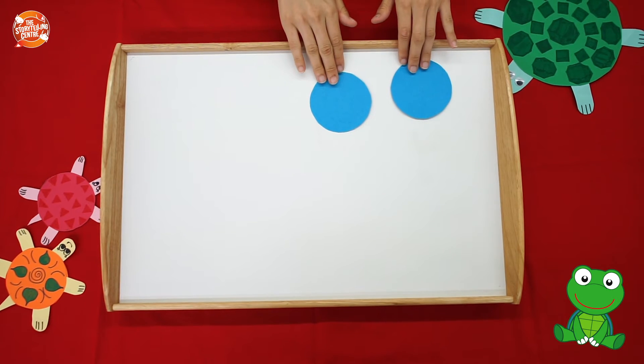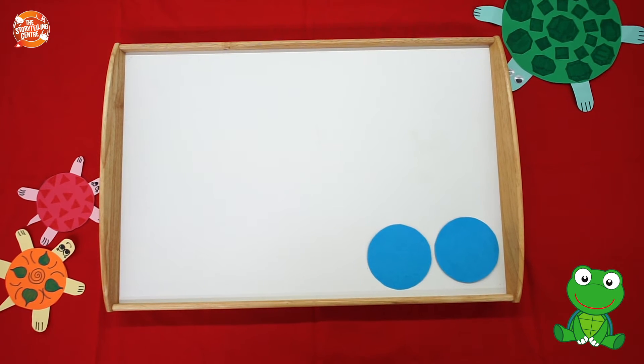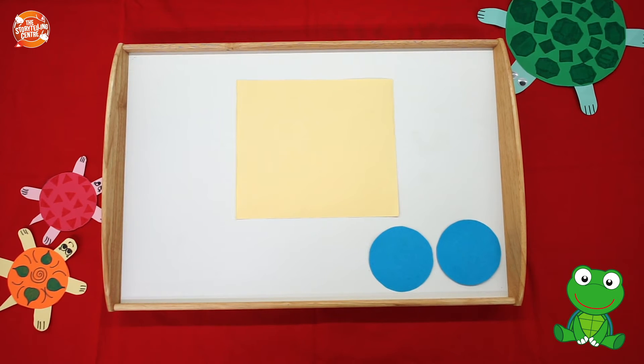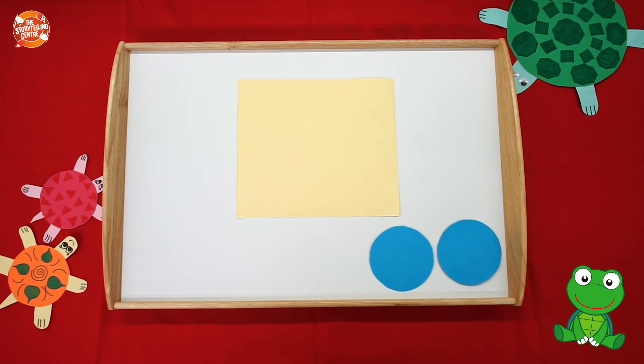Now let's put the circles to the side. Now let's take our other piece of paper. We are going to use this to draw the head, the four legs, and one tail.